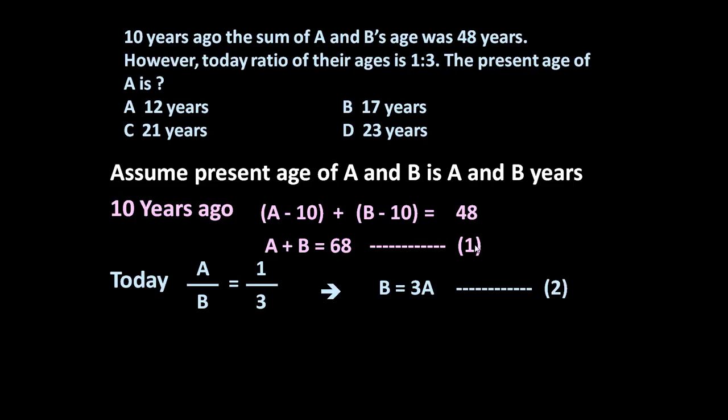Now we have to solve this equation number 1 and 2 to get the value of A and B. So now A plus B is equal to 68, B is equal to 3A. So let us put this in equation number 1. So A plus B, B means 3A. A plus 3A is equal to 68. Solve it. A is equal to 17 and B is equal to 51.